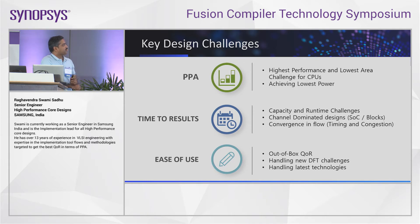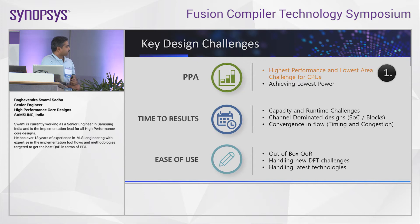We'll go into specifics of these three key care-abouts. For PPA, we chose a high-performance ARM core for our experimentation with Fusion Compiler. For time to results, when working with big SOC designs like automotive or highly congested designs, we want to run faster and achieve SOC timelines — that is where time to results comes in.